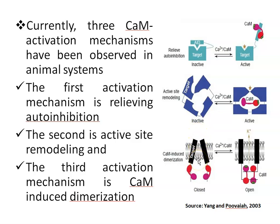When the potassium ion channel is in its closed state, the interaction of two Calmodulin molecules with the two potassium ion channel domains causes the potassium ion channel to open — this is Calmodulin-induced dimerization.